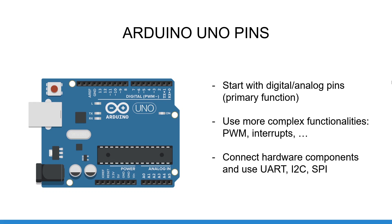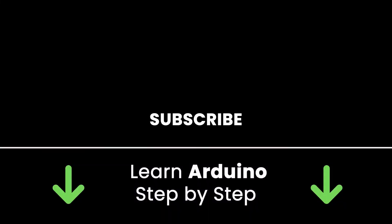Now you have a complete overview of the Arduino pins and what you can do with them. Use this video as a quick recap whenever you need it. If you want to get started, I recommend first using the digital and analog pins with their primary functionality, then working with interrupts and PWM, and finally exploring the infinite number of sensors and actuators you can connect using different communication protocols. If you liked this video, subscribe to get more tutorials, and check out my online courses to learn Arduino step by step. Thank you for watching — see you in the next tutorial.